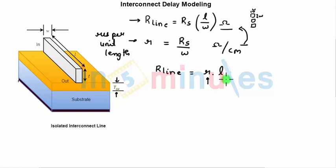This shows that there will be an increase in R_line if there is an increase in the interconnect length. We will see this as we move ahead.